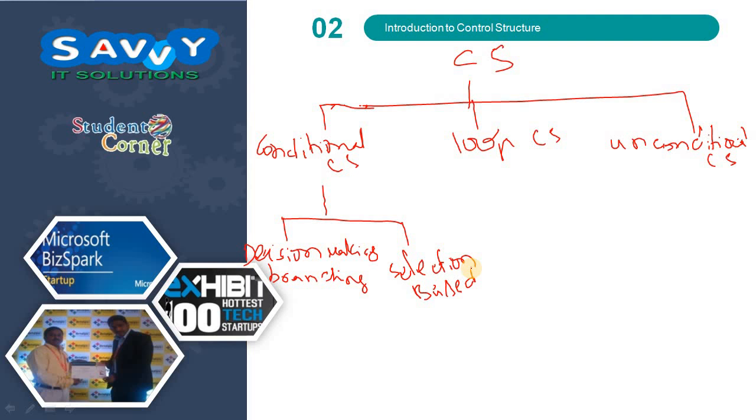In decision making or branching, if this is true, we need to execute these statements. If false, then execute other statements. This is the way we give instructions. Decision making or branching is classified into four categories.